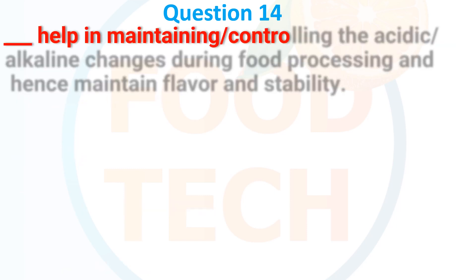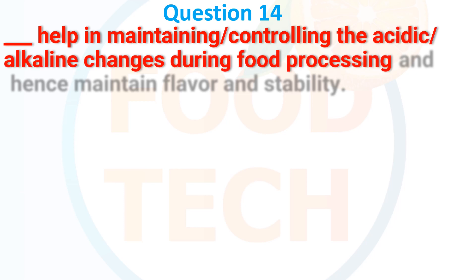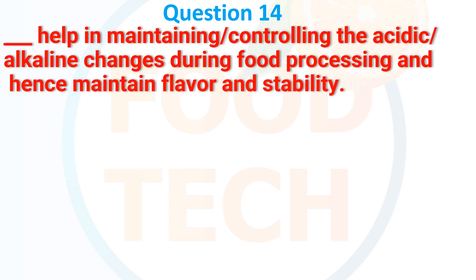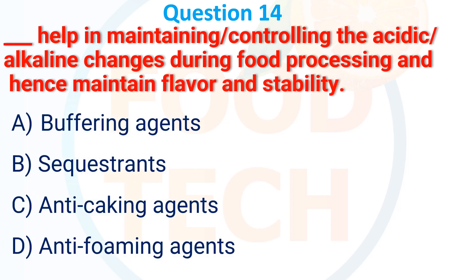Question 14. This helps in maintaining and controlling the acidity and alkalinity change during food processing and hence maintains the flavor and stability. A. Buffering agent. B. Sequestrant. C. Anti-caking agent. D. Anti-foaming agent. The correct answer is A: buffering agent.